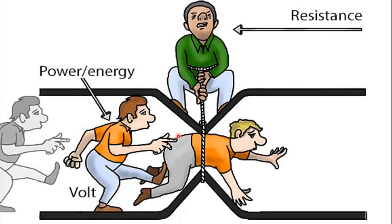This image is the perfect analogy of resistance, in which a person is trying to pass through a path. To do so, he is applying force — or energy — and this energy represents voltage, while the motion of this person represents current. The other person trying to oppose his motion represents resistance. Similarly, electrical resistance tries to oppose the flow of current in an electrical circuit.